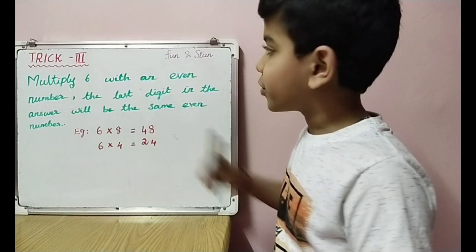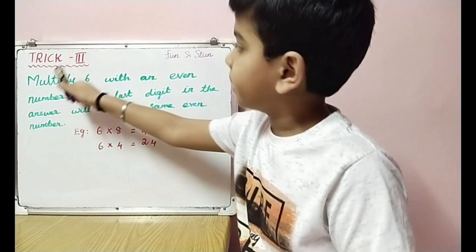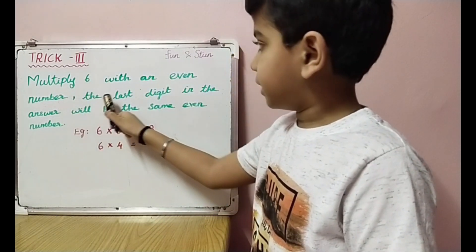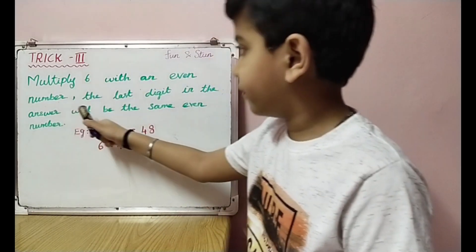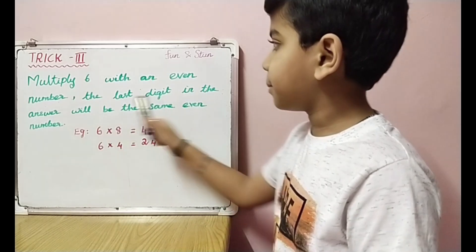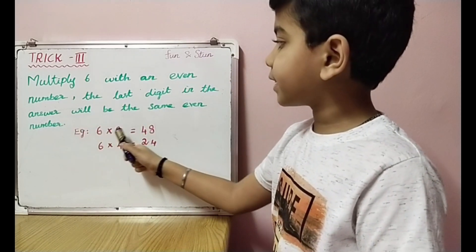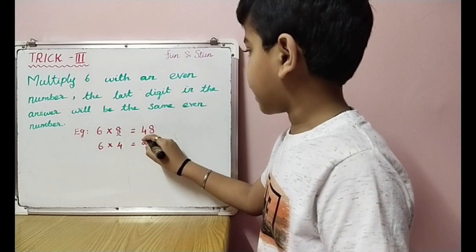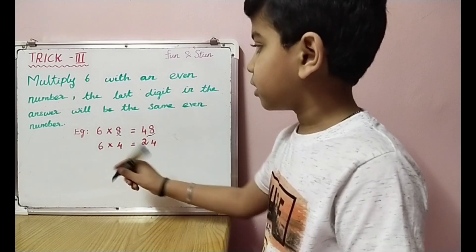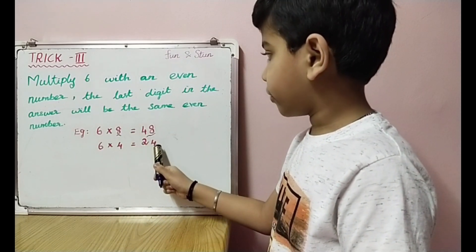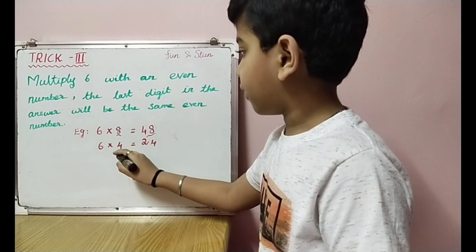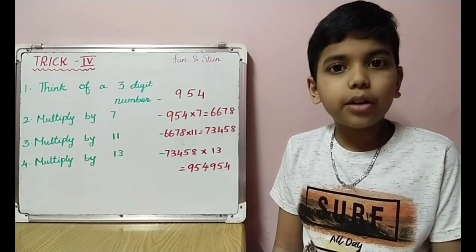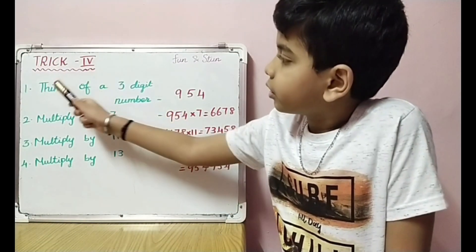Trick 3: Multiply 6 with an even number — the last digit in the answer will always be that same even number. For example, 6 times 8 is equal to 48; we have 8 and 8. And 6 times 4 is equal to 24; we have 4 and 4. Check it out!